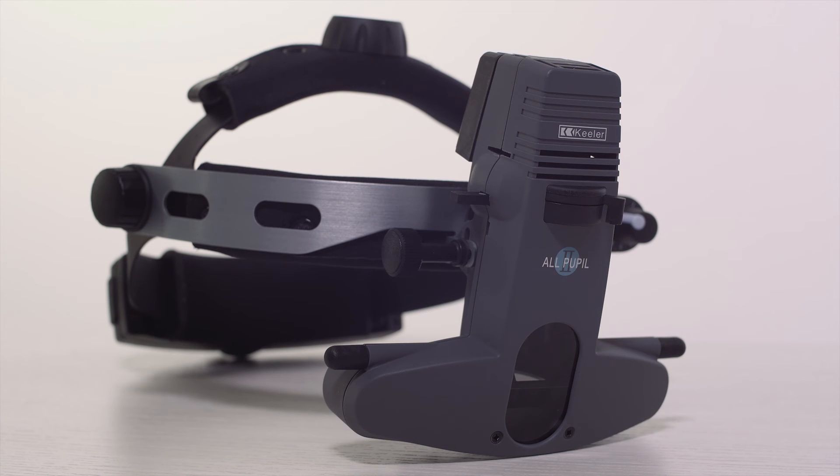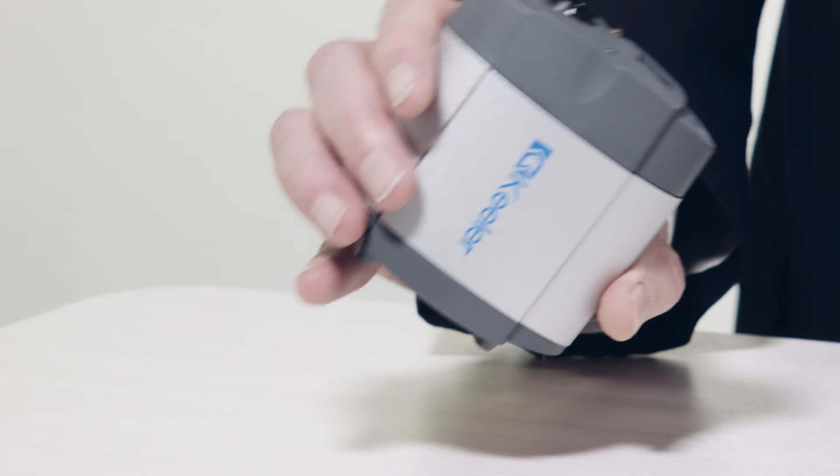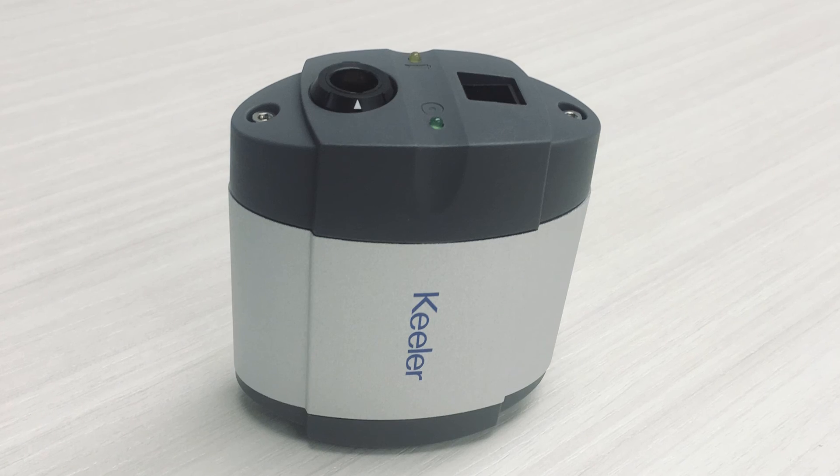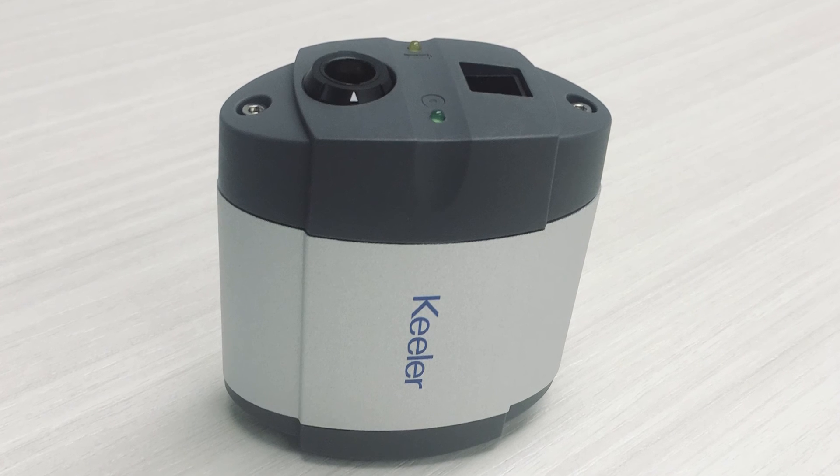All Pupil 2 or Vantage Plus wired units can be powered using the SmartPak for mobility. The metal hydride battery allows you hours of use before you need to recharge the battery. The SmartPak converts to a wall-pack system.